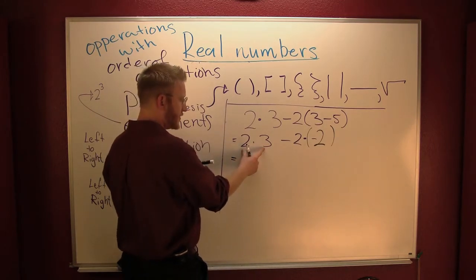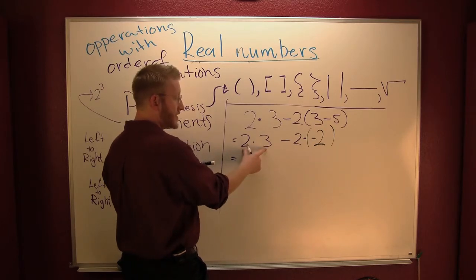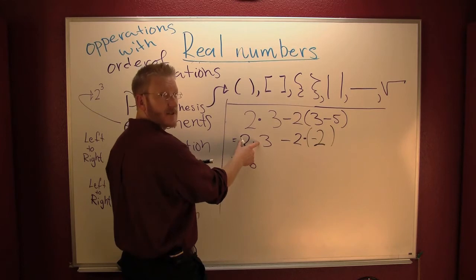This is multiplication. What's two times three? Six. For sure. Is it positive or negative? It's positive. Why? Because they have the same sign.